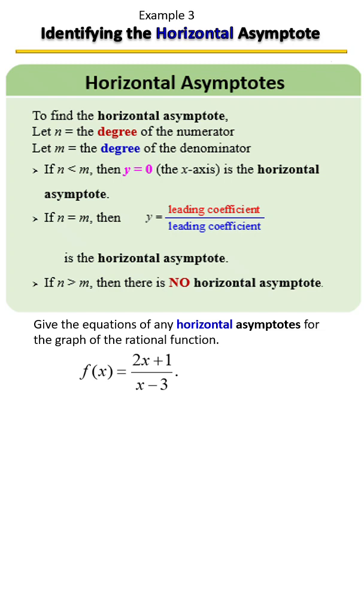Let's find the horizontal asymptote for the given rational function. Finding the horizontal asymptote has to do with the degree of the top and the bottom. So the degree of the numerator is one, the degree of the denominator is also one, so they are the same. And when the degree of the numerator is the same as the degree of the denominator...